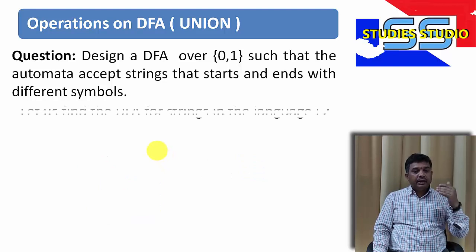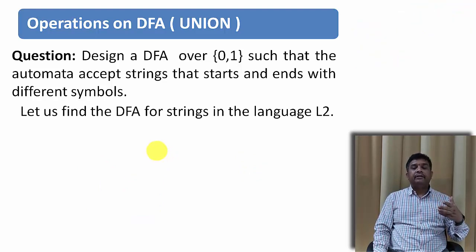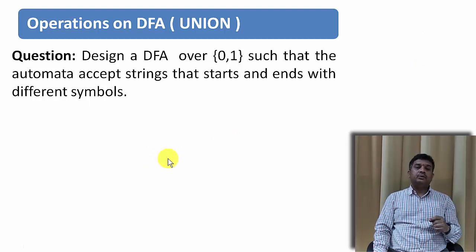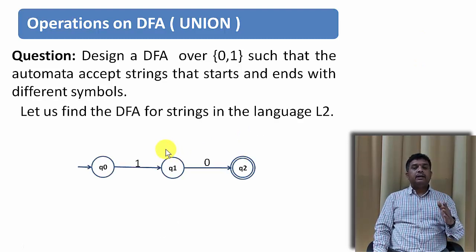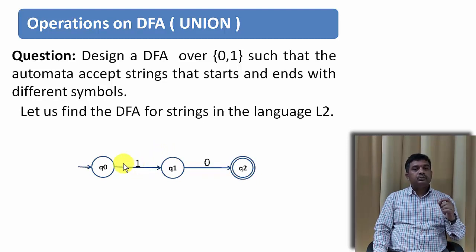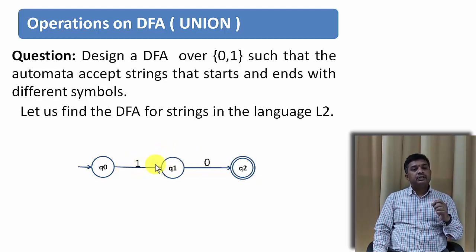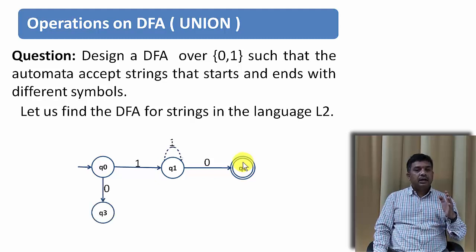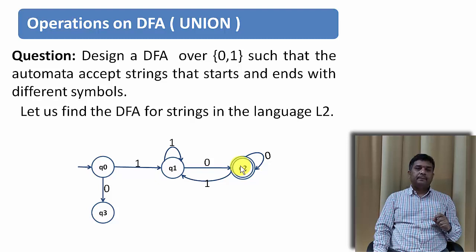Now let us design the second DFA for language L2, which starts with 1 and ends with 0. For this language also the minimum string length is 2. The starting input symbol is 1 and the ending input symbol is 0. With minimum string 1 then 0 we reach the final state, and the other states are defined accordingly.